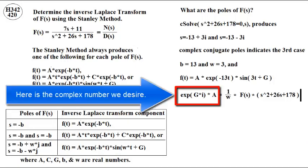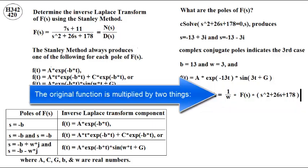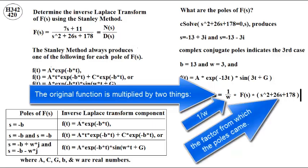Here is the complex number we desire. It's calculated using this procedure. The original function is multiplied by two things: one over omega and the factor from which the poles came.